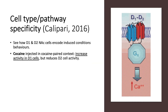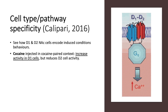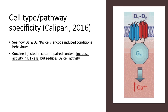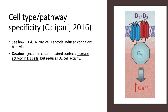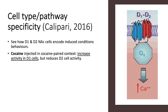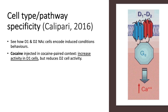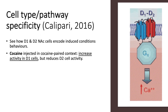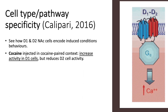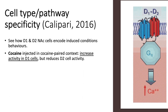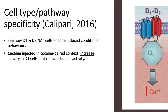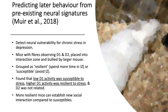Calipari in 2016 looked at cell type and pathway specificity, whereby the researcher examined how D1 and D2 nucleus accumbens cells induced conditioned behaviors. Cocaine was injected in cocaine-paired contexts, and that increased activity in the D1 cells but reduced activity in the D2 cells.